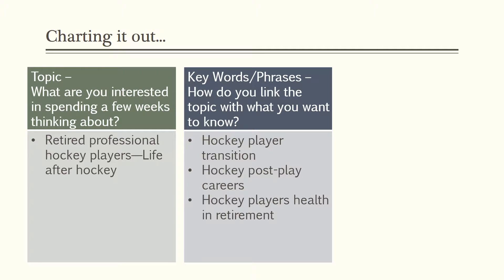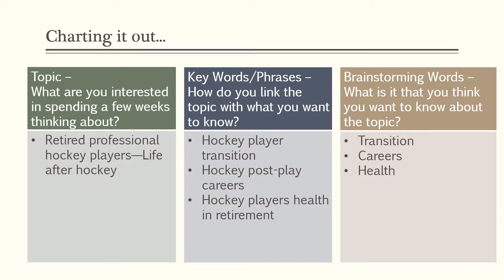If you have a broad topic identified, start throwing out words related to what you want to know about — this is your brainstorming piece. For example, if the topic was looking at life after hockey, some keywords or phrases would include hockey player transition, hockey players' post-play careers, and hockey players' health in retirement. This process takes time and many variations and combinations of words and phrases. As you brainstorm, the researcher in this example wanted to identify the transitions, the careers, and the health of retired professional hockey players. Be patient with yourself — it takes time. If you need help, there are resources available through the university library.